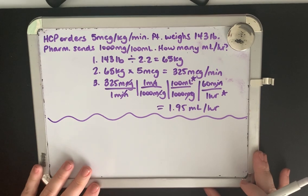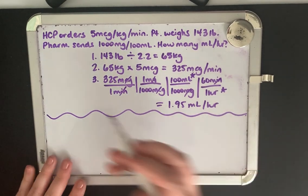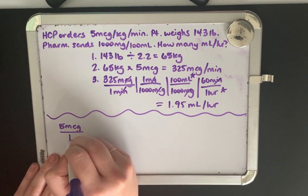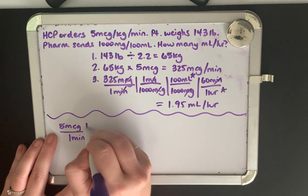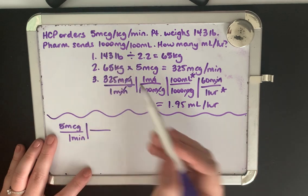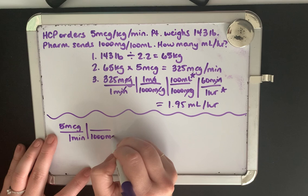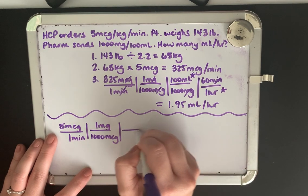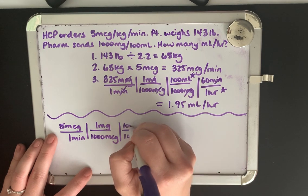So let's start with what we know. We have an order for five micrograms per kilogram per minute. So we're going to get five micrograms. We're going to be giving this over a minute. Now this isn't considering the patient's weight, but we will get there in just a moment. So again, we need to convert to milligrams so that we can use the medication that was given to us. So there's 1000 micrograms in one milligram.